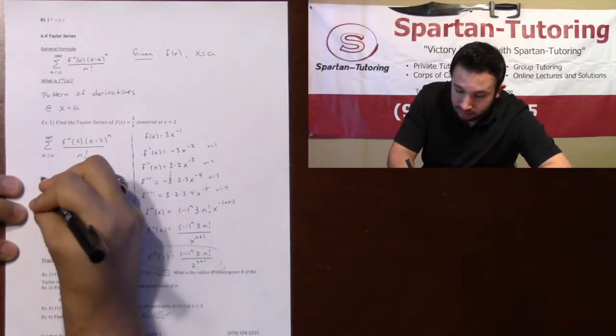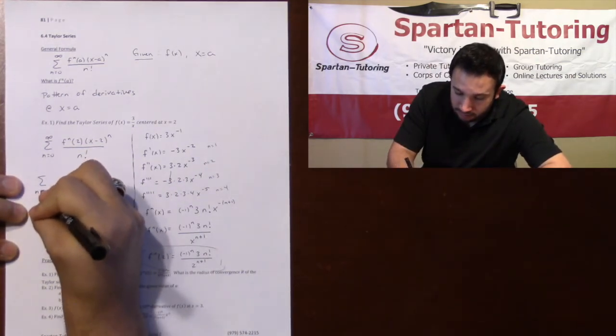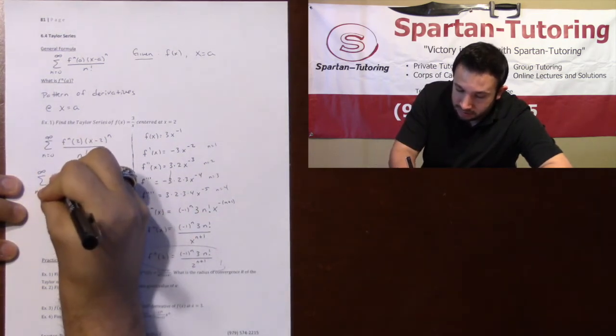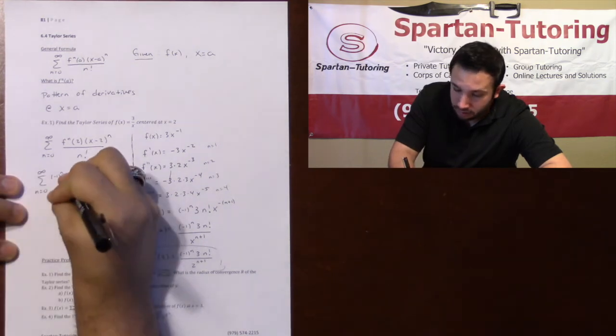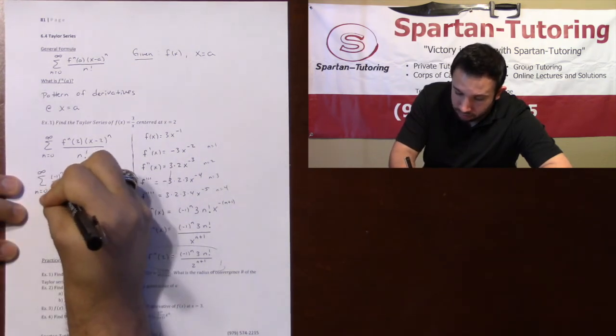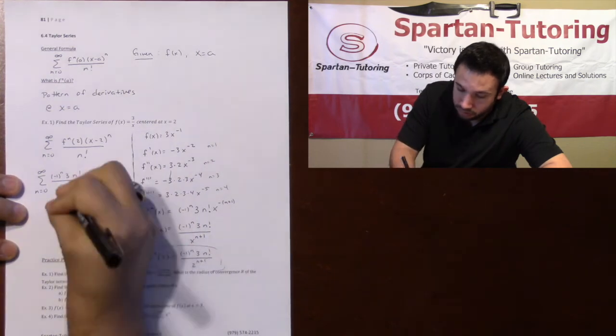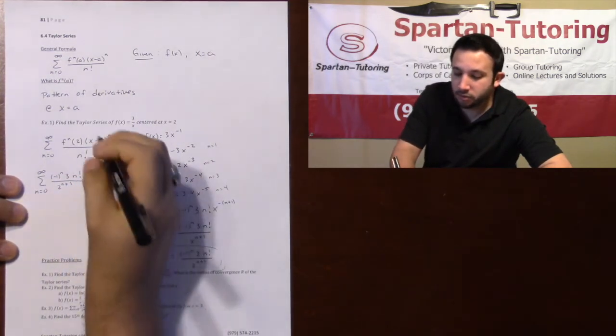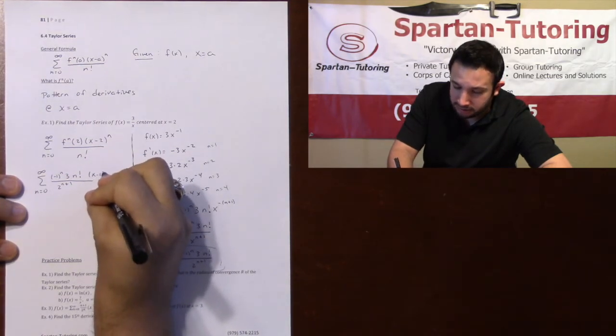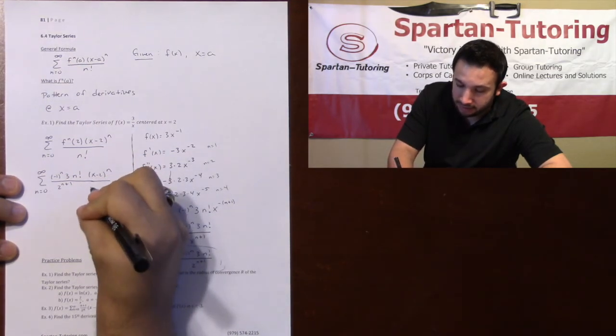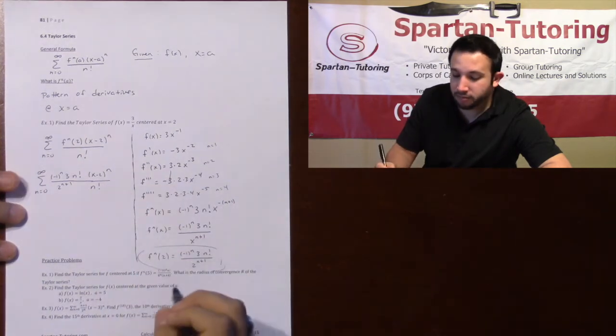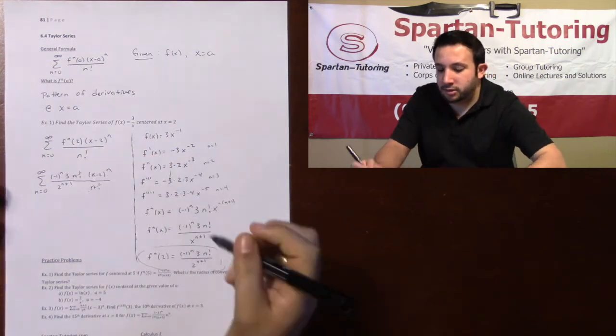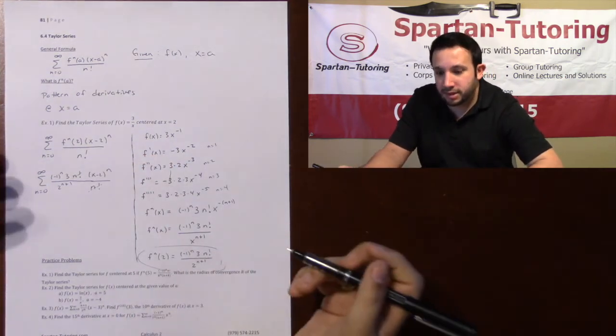And so your Taylor series is going to be the sum from n equals 0 to infinity. f to the n of 2, this is negative 1 to the n, 3 n factorial, over 2 to the n plus 1. So there's your f to the n of 2. But don't forget, you still have this x minus 2 to the n and this n factorial there on bottom. And notice that in this situation, the n factorials cancel. They don't always cancel because you don't always have a factorial, but in this case they did.